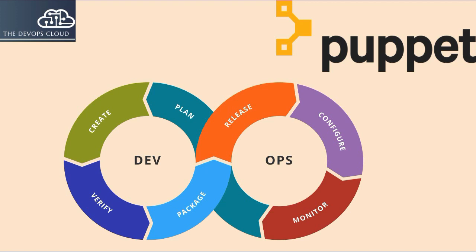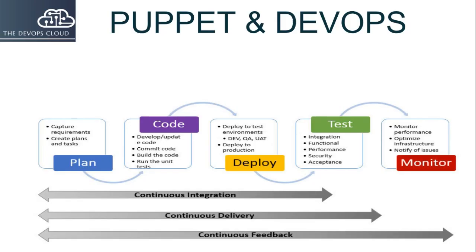Why is DevOps used? DevOps allows agile development teams to implement continuous integration and continuous delivery, which helps them to launch products faster into the market.